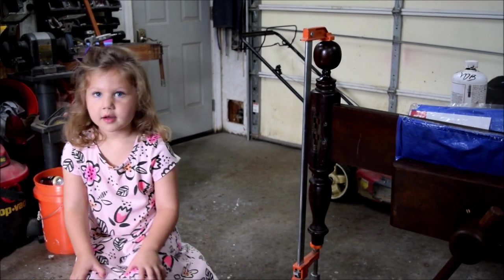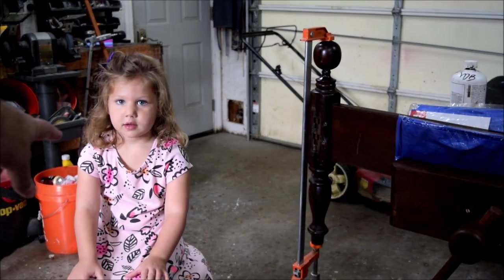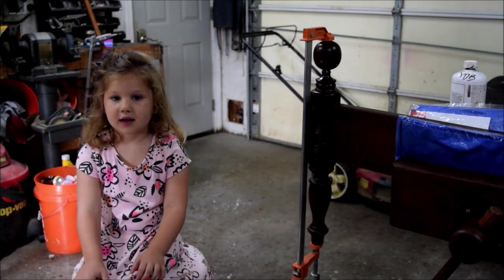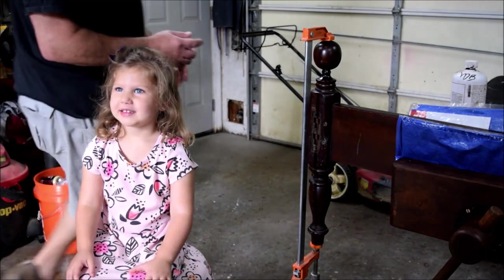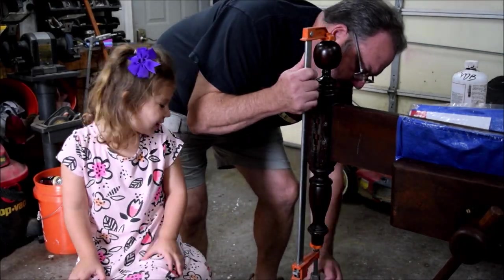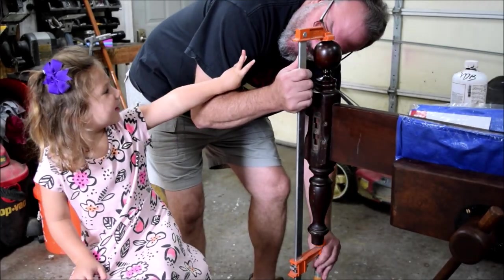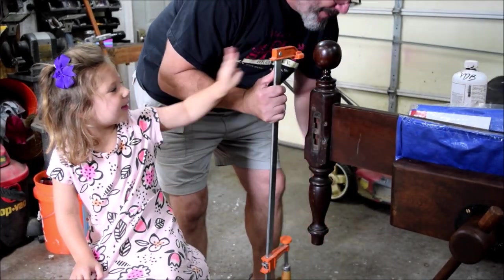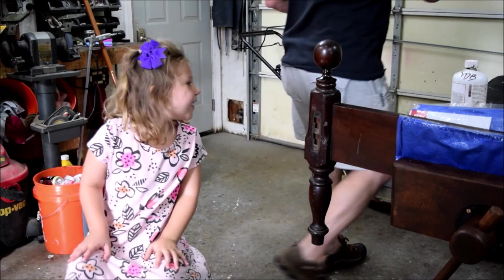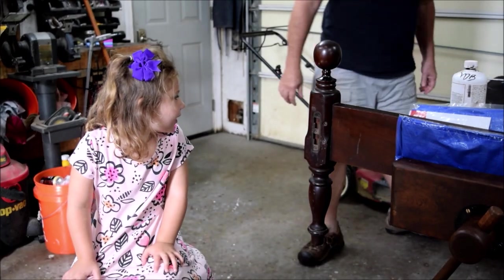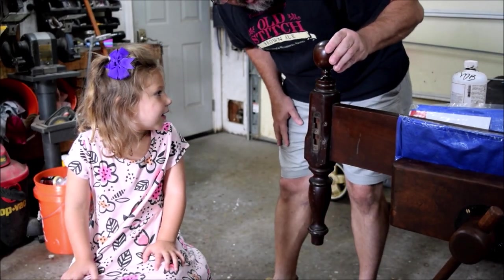Hey, good morning. Let's take the clamps off and see how we did. We've got a little helper here today. What's your name, honey? Charlotte. Charlotte. How old are you? Three. Three years old, that's right. Yeah. What do you think? Do you think we did a good job? Yeah.